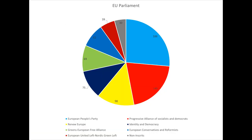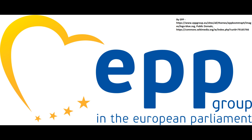Now, on with the political groups. In the European Parliament, there are eight political groups — well, more like seven, because one of them is just a group for everyone who isn't in a group. The three largest political groups make up what is known as the Commission, which acts as the government parties in Parliament. The first of these groups is the European People's Party group, or EPP. The EPP represents broadly center-right parties, and can be described as Christian democratic and liberal conservative.